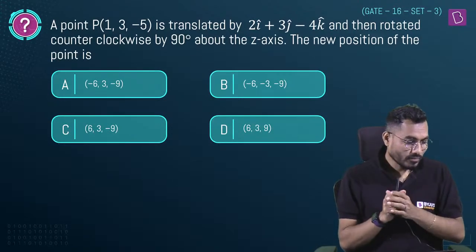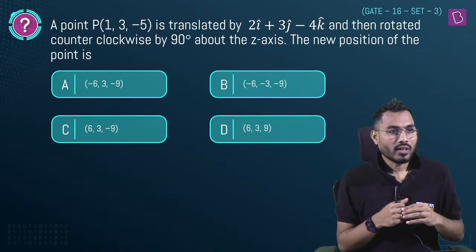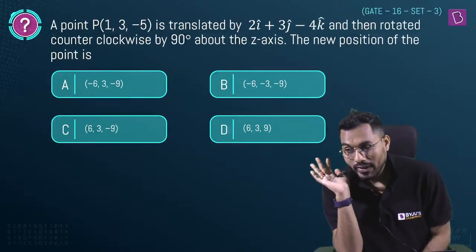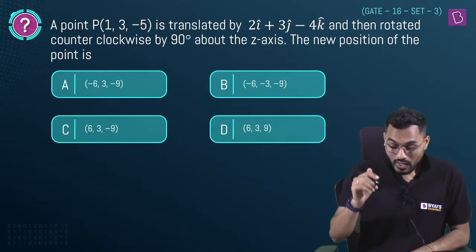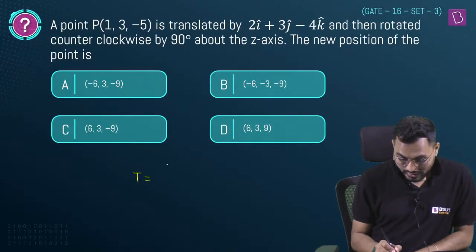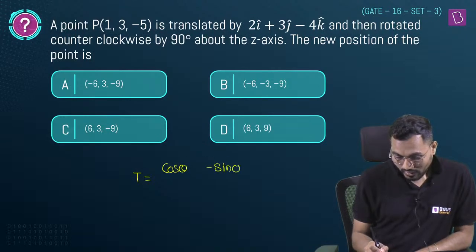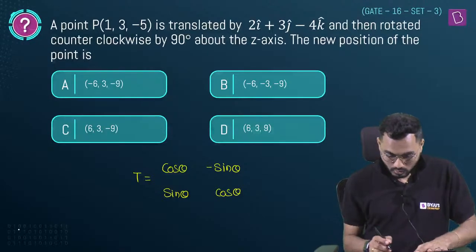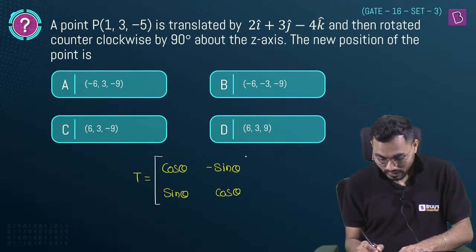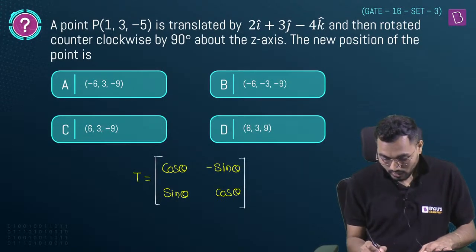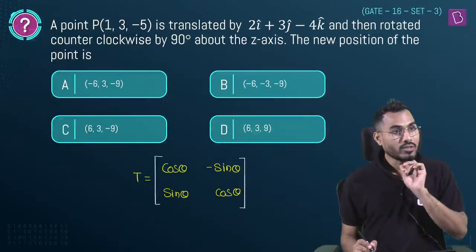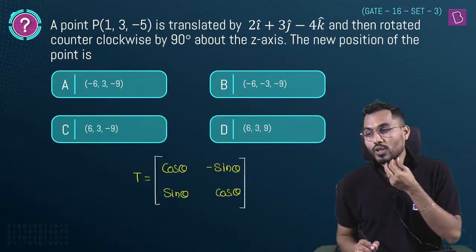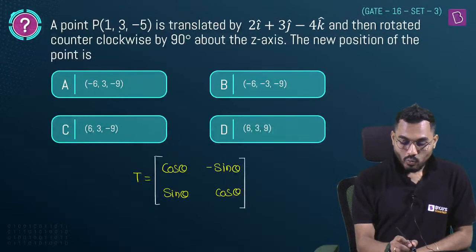Now transformation commands. The rotation transformation matrix is: [cosθ, -sinθ; sinθ, cosθ]. Counterclockwise rotation is positive, clockwise is negative. This topic will be covered in detail in the Hindi revision series on NC/CNC machines. Point P(1, 3, -5) is first translated then rotated clockwise 90 degrees about the z-axis.